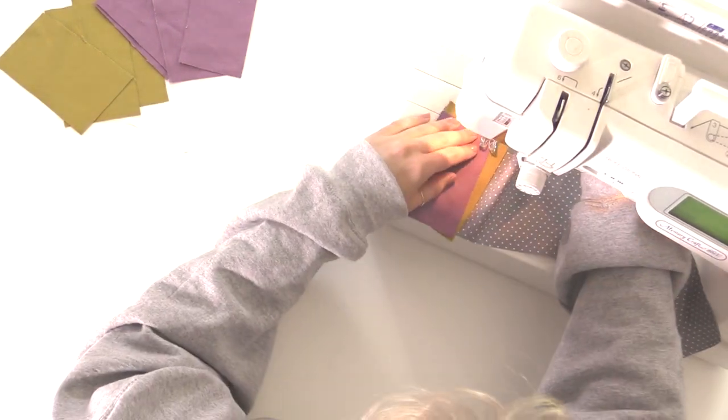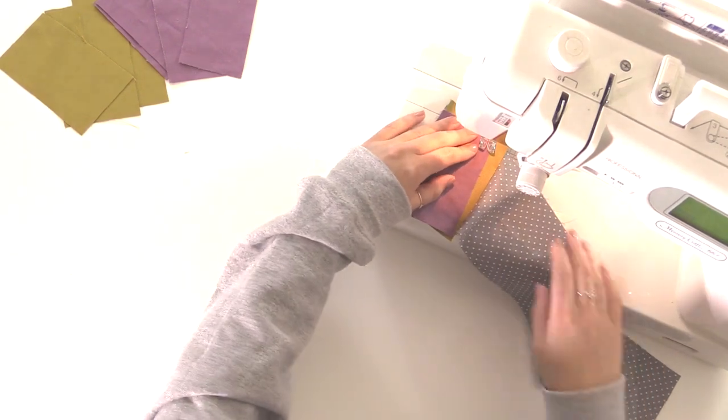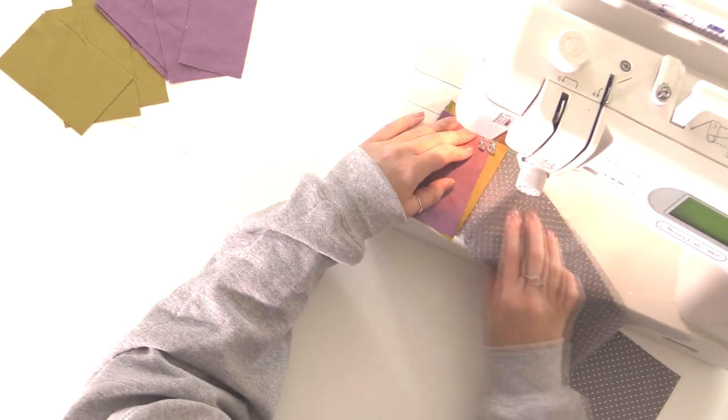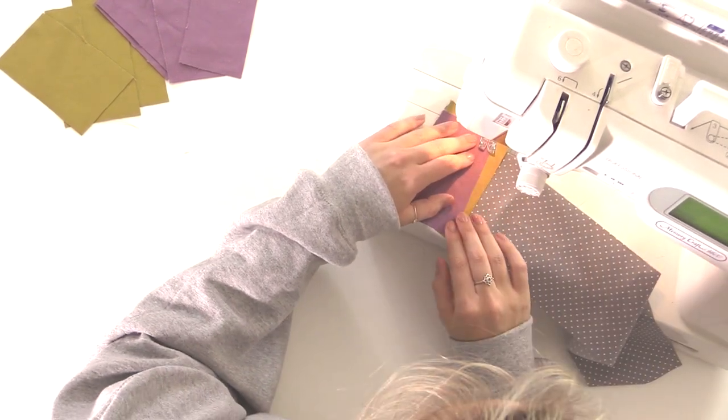If this fabric is patterned as well, make sure it is right sides together with the piece underneath. Place it at an angle and sew down this line.